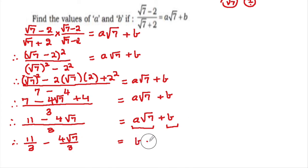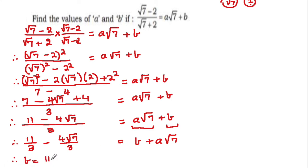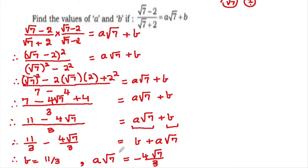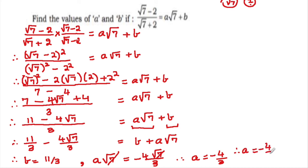We write it as b plus a√7. Comparing, b equals 11 upon 3, and a√7 equals minus 4√7 upon 3. The √7 cancels on both sides, therefore a equals minus 4 upon 3. So a equals minus 4 upon 3 and b equals 11 upon 3, and that is our answer.